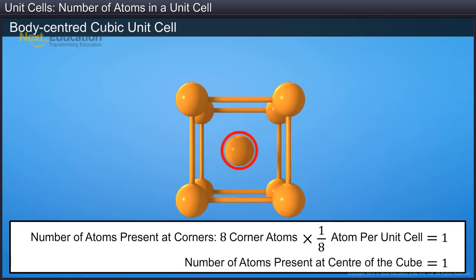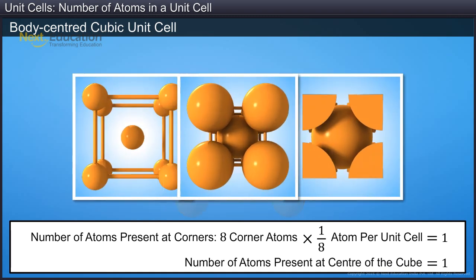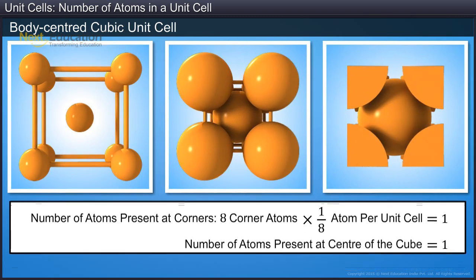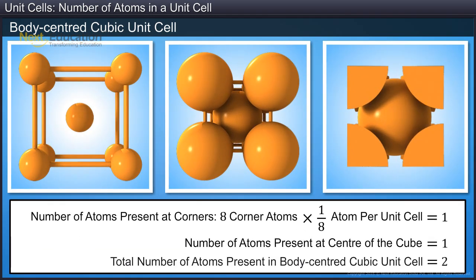There is one atom at the center of the cube. Thus, the total number of atoms in a body-centered cubic unit cell is two.